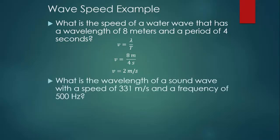Let's take a look at another example. What is the wavelength of a sound wave with a speed of 331 meters per second and a frequency of 500 hertz? This time, since we know the frequency, we'll write the wave speed equation that has frequency in it, V equals f lambda. We can plug in our speed and our frequency. And when we divide both sides by 500, we can find out that the wavelength of this wave is 0.662 meters.